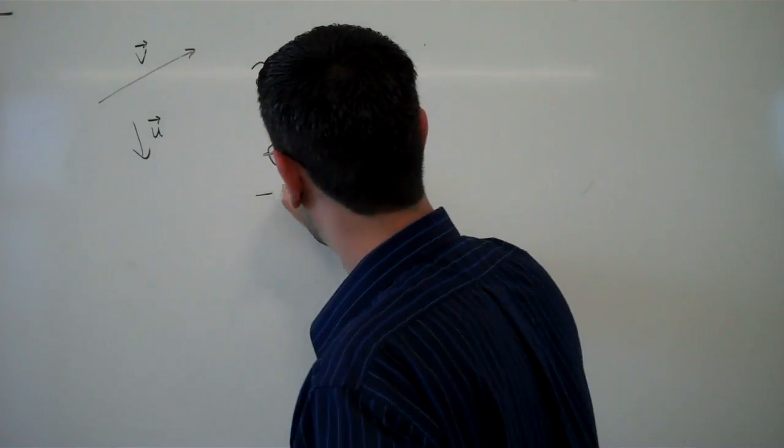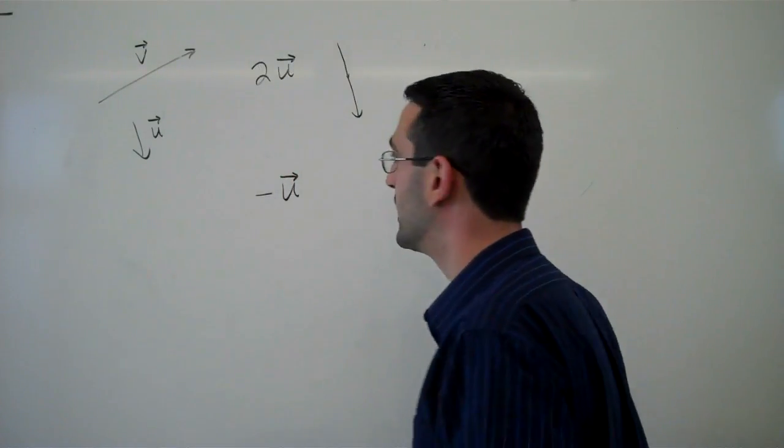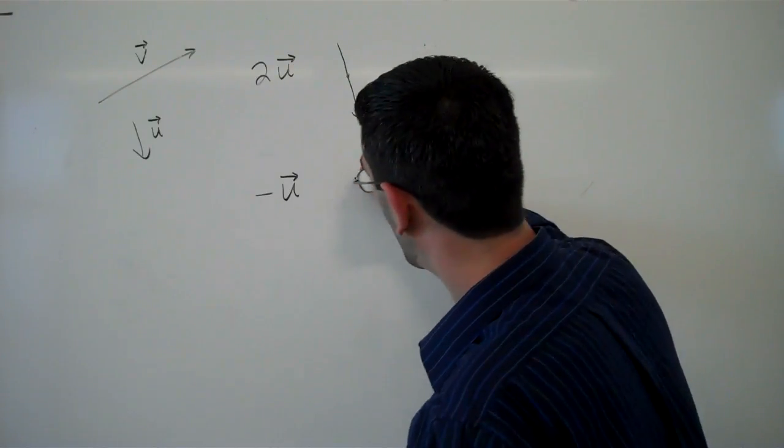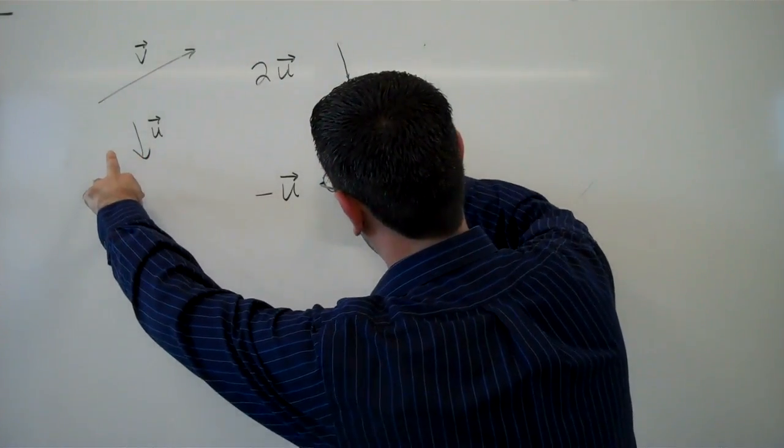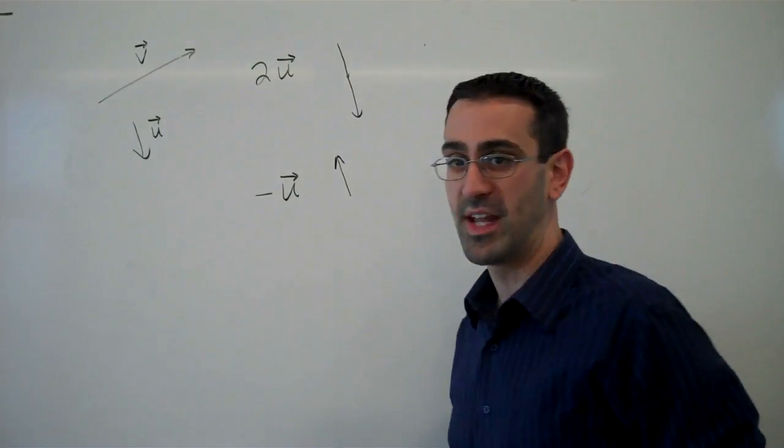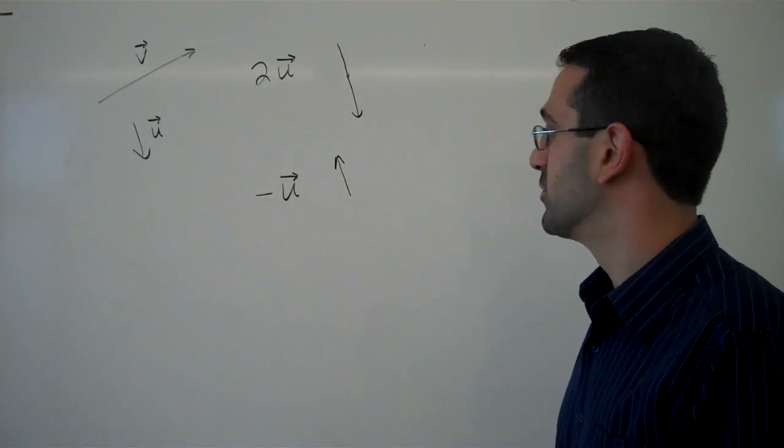Likewise, negative u would be the opposite of u, so it would point in exactly the opposite direction. In this case, it was the same length because it was only scaled by one, negative one.